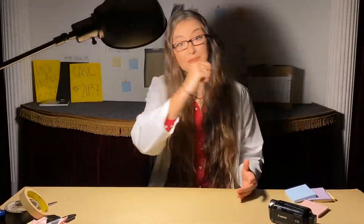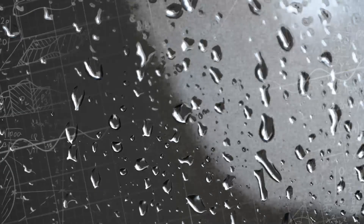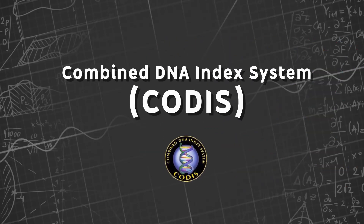DNA is such an amazing structure. It contains all of the information that makes you, you. A speck of blood, a follicle of hair, a drop of sweat, or even the mere contact of skin across a surface can act as a viable DNA sample that can be compared to known DNA reference samples in the Combined DNA Index System, also known as CODIS.